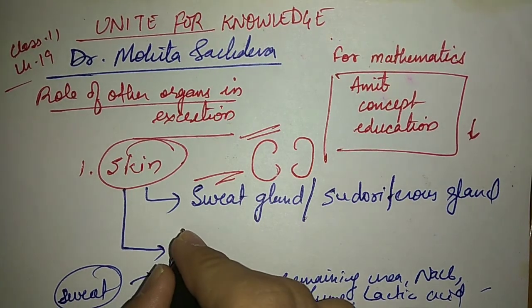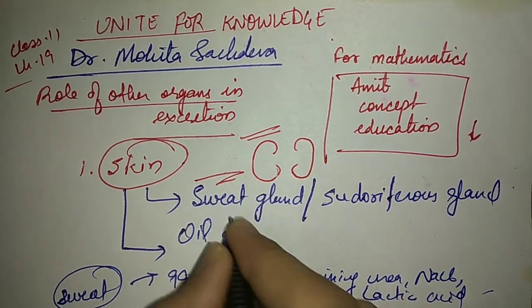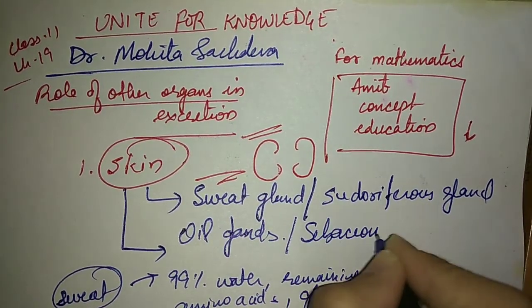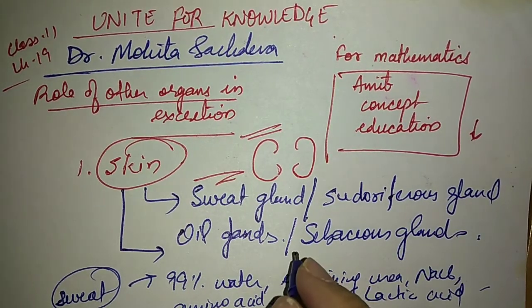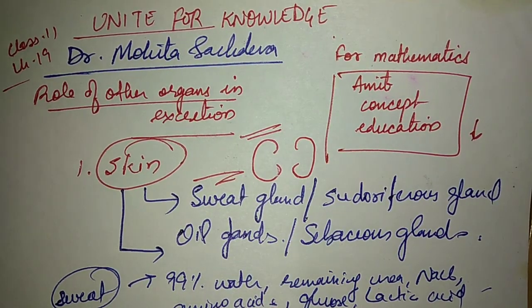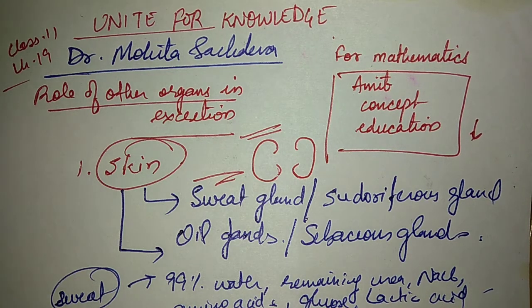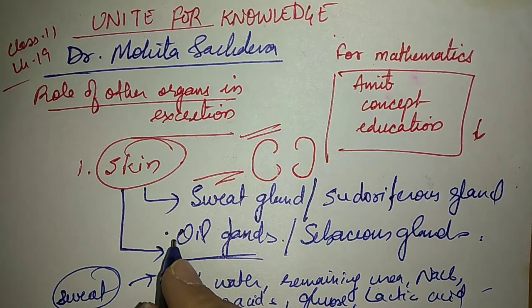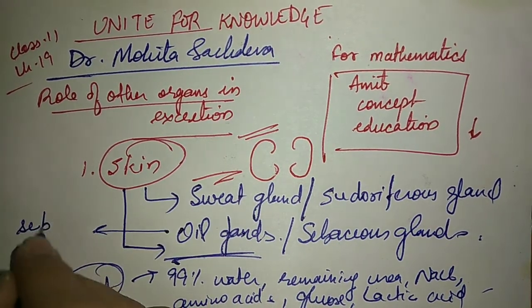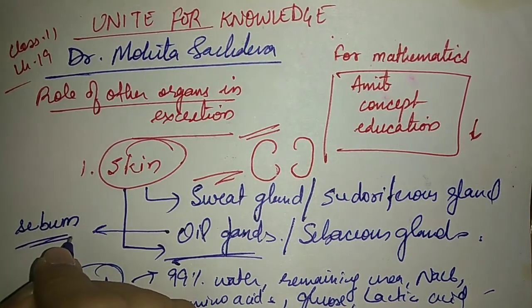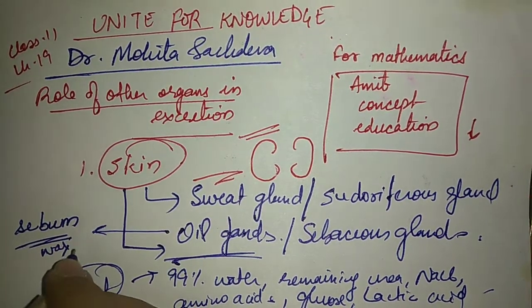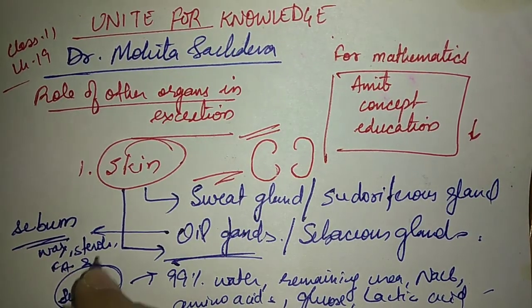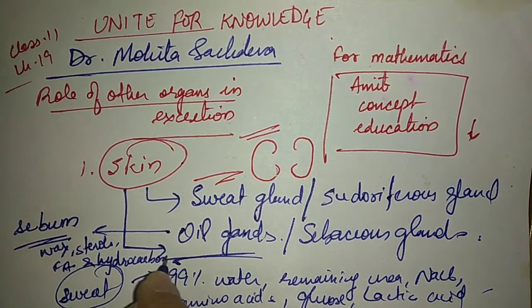Lactic acid is also present in the sweat. The second type of gland present in the skin are the oil glands, also known as sebaceous glands. These sebaceous glands produce oil wax and secrete sebum. It contains wax, sterols, fatty acids, and other hydrocarbons which are not of our use.